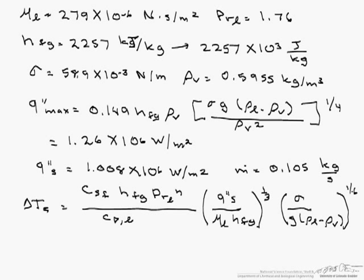The C sub SF and n are dependent on the solid and liquid combination. Since this is copper and water, C sub SF is 0.0128, and our n equals 1.